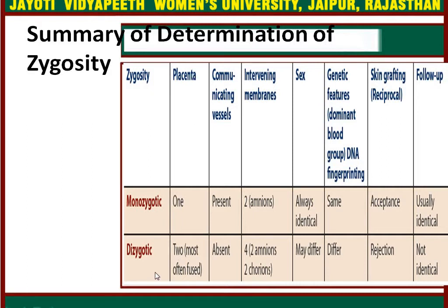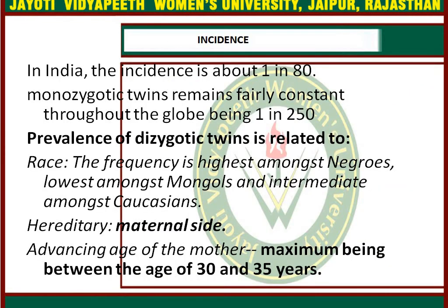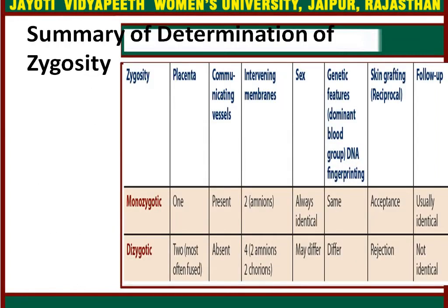In dizygotic twins, there will be two placentae, communicating vessels will be absent, and intervening membranes will include two amnions and two chorions. Sex may be different and genetic features will differ. Skin grafting will be rejected and follow-up will not be identical. This table is very important to differentiate between monozygotic and dizygotic twins.